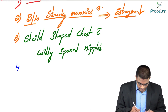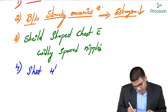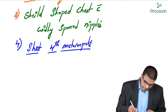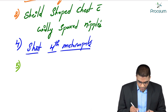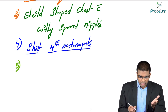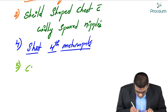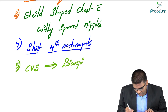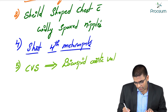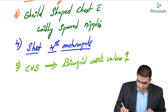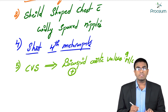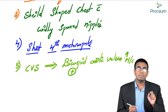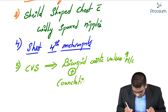Other clinical features include short fourth metacarpals. Because one X chromosome is absent, other organ systems are also affected. In the cardiovascular system, a bicuspid aortic valve can be seen — that is the most common cardiac abnormality.